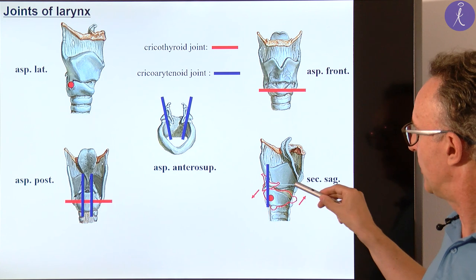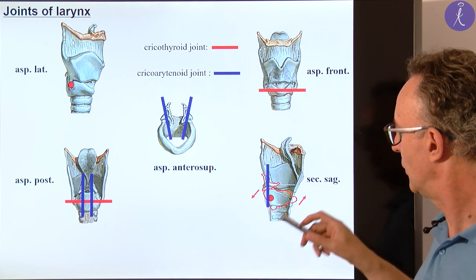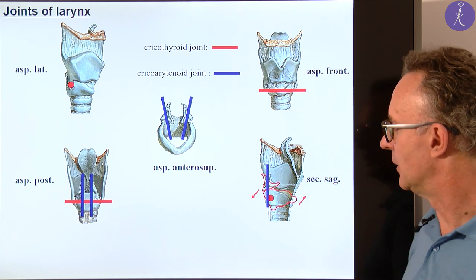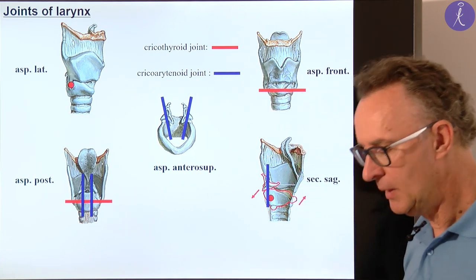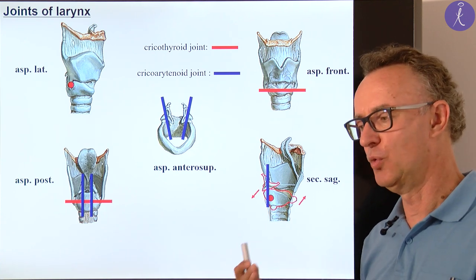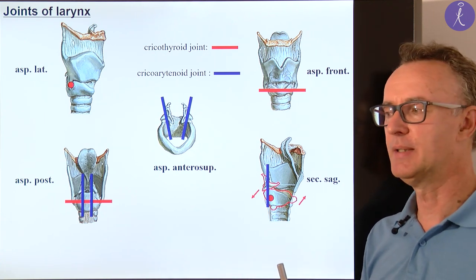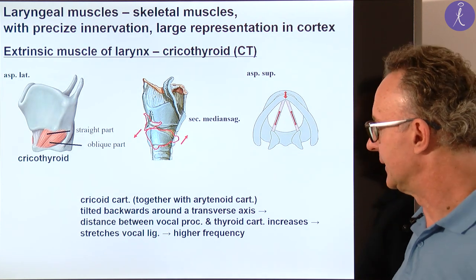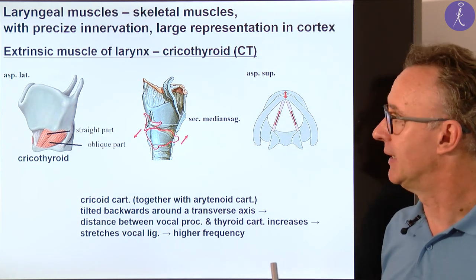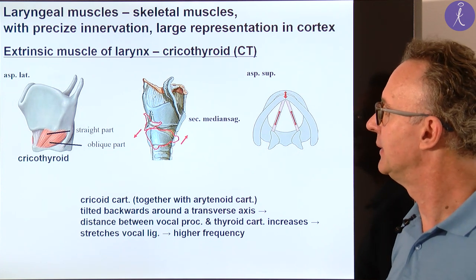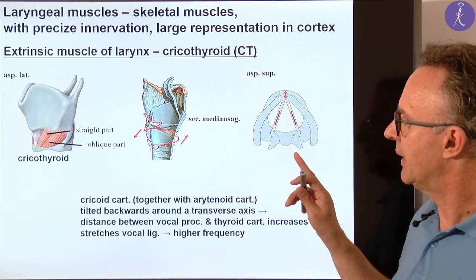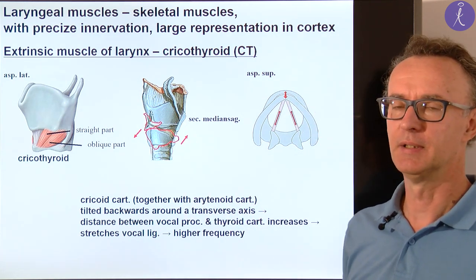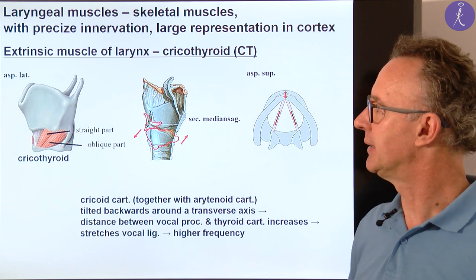The two endpoints of the true vocal ligament or vocal fold are between the inner surface of the lamina of the thyroid cartilage and the vocal process of the arytenoid cartilage. I mentioned sometimes 'vocal fold' and sometimes 'vocal ligament' — the vocal ligament is included in the vocal fold, so both terms are basically correct. Now let's see the muscles. All of them are skeletal muscles in the larynx — don't forget this for the histology part of the exam. They can be divided into two groups: the extrinsic and intrinsic muscles.